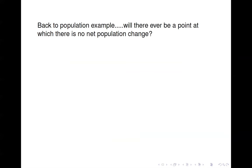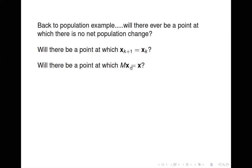An interesting question related to our population example: will there ever be a point at which there's no net population change — where the number of people moving to the suburbs equals the number moving to the city? Another way to ask it: will there ever be a point where x_{k+1} equals x_k, or equivalently, where applying transition matrix M to state vector x gives back the same x? This system is similar to ones we know how to solve, but we need to manipulate it because the right-hand side has a variable, not a constant.